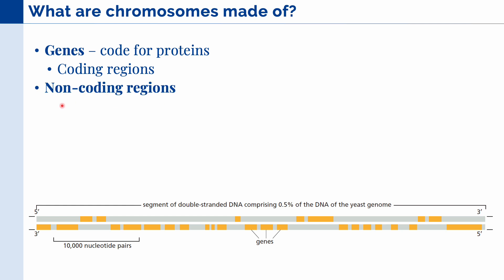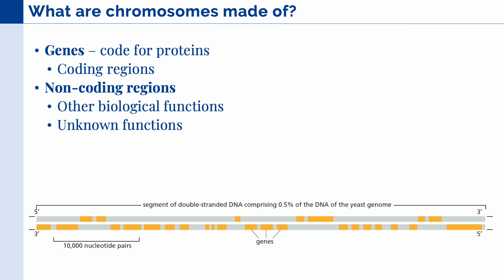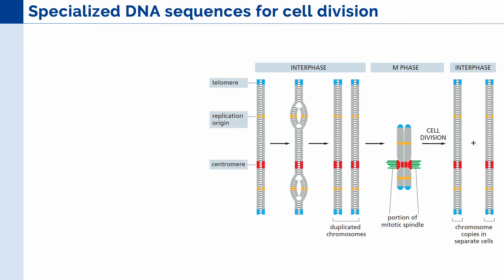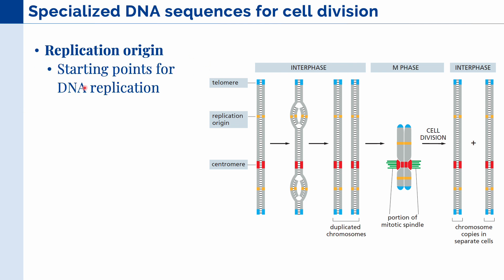Aside from that, we also have non-coding regions, the ones in gray here in this segment of DNA. They have other biological functions, or they have unknown functions that are still being researched today. Aside from coding and non-coding regions, there are also specialized DNA sequences that we can find in the chromosome, which are mainly used for cell division. The first of these are the different replication origins, and these are starting points for DNA replication. In a single chromosome, there can be multiple replication origins.